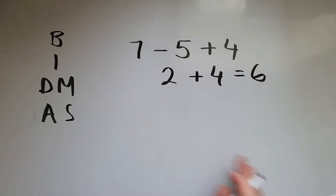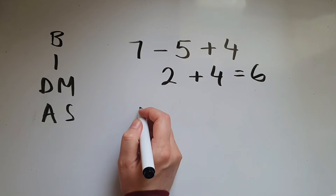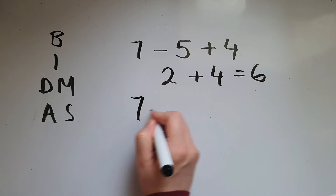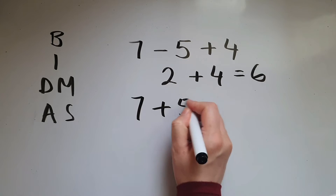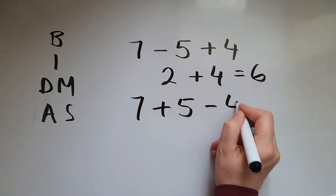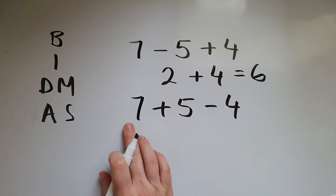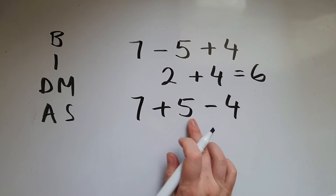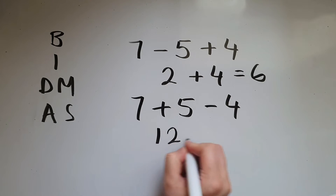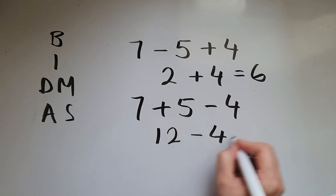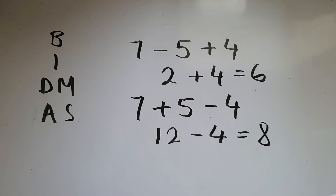So if I have 7 add 5 take away 4, again I do 7 add 5 first, which is 12, take away 4 gives me 8.